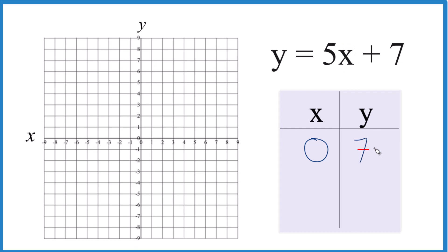I could try 1, 5 times 1 is 5, plus 7 would give me 12. That's not going to fit. So let's call it negative 1. 5 times negative 1, that's negative 5, negative 5 plus 7, that's 2. So that will fit.